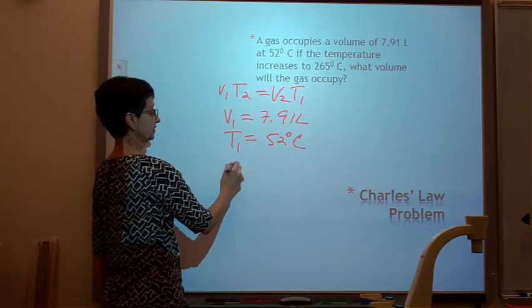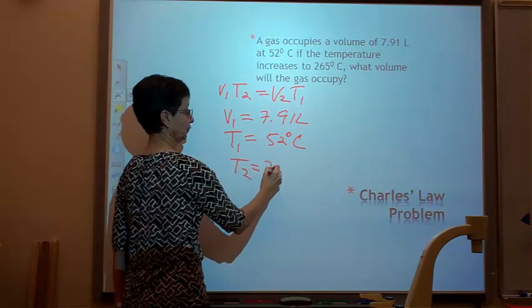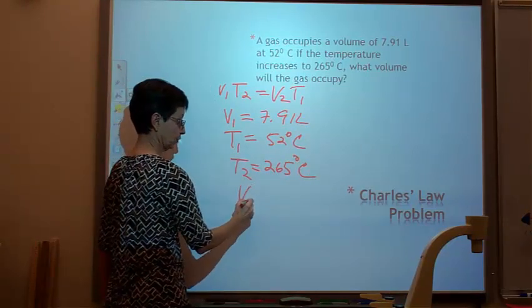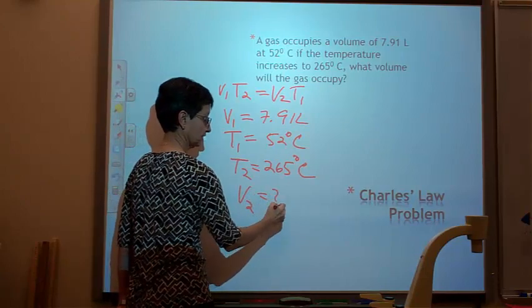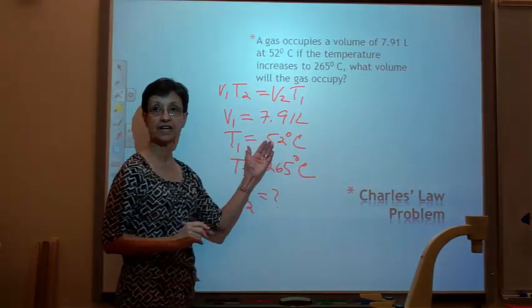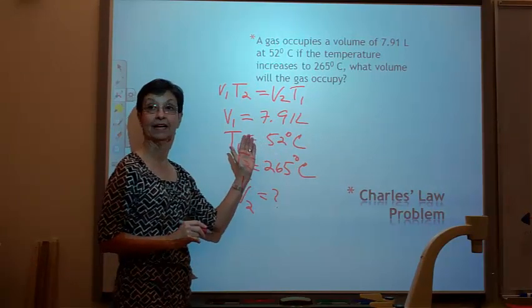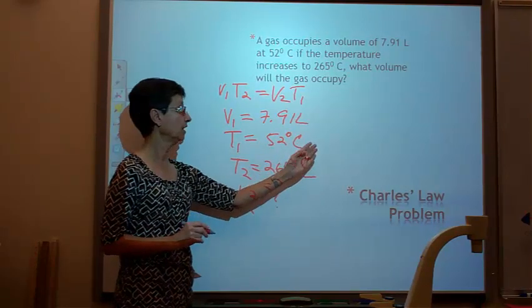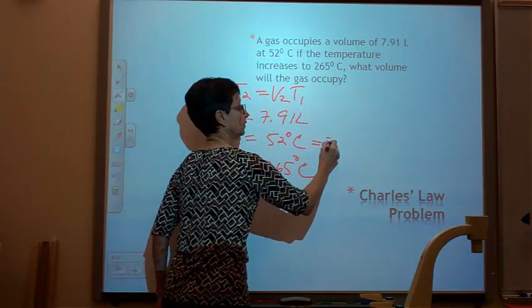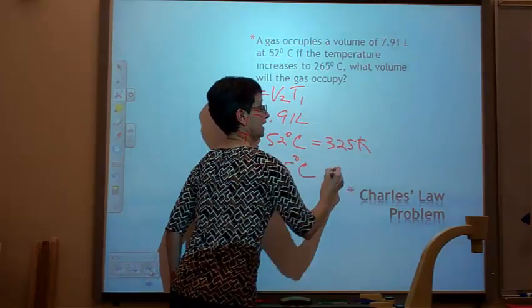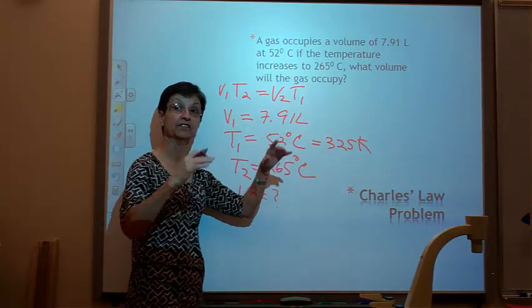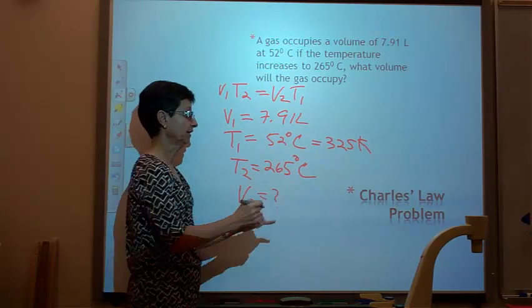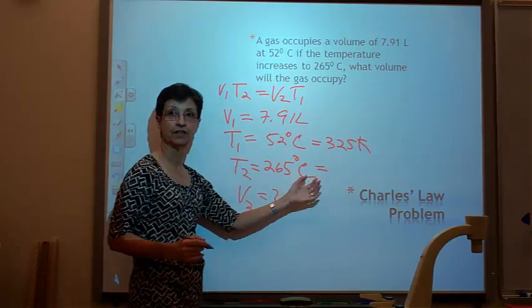And it increases, the temperature increases, so my T2 equals 265 degrees Celsius. What volume will it occupy? So my V2 is what I'm looking for. That's my question mark. Now, first thing I have to do is to change my Celsius temperatures, convert them to Kelvins. 52 plus 273 is equal to 325 Kelvins. Notice that there's no degrees Kelvins, it's just Kelvins. And then 265 plus 273 is equivalent to 538 Kelvins.